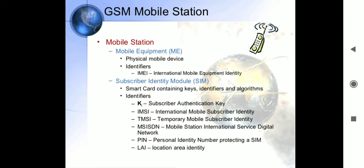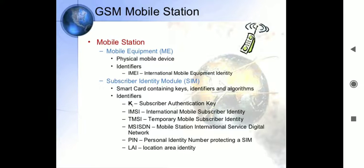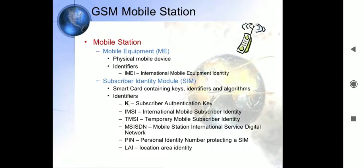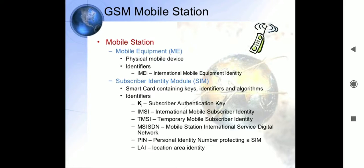Before the GSM system was available, most countries throughout the world used cellular mobile communication systems that were often incompatible with each other. Most cellular mobile telephone units could only operate on a single type of cellular system, so most customers could not roam to neighboring countries.